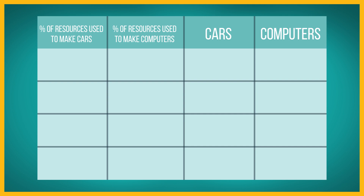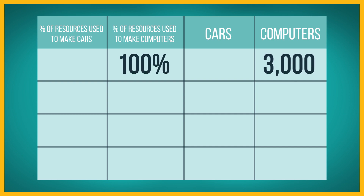Our simple economy produces only cars and computers. Suppose the economy can produce 3,000 computers when it uses all of its resources to make computers. However, when the economy uses all of its resources to make computers, it has no resources available to produce cars, and therefore cannot produce any cars.